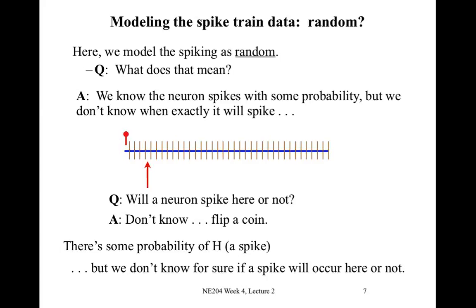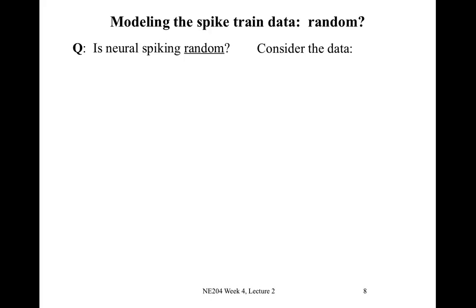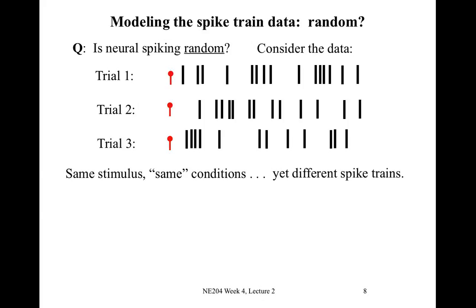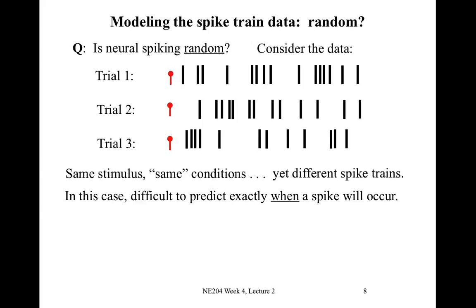A question we can ask is: is neural spiking random? To answer that, let's consider some data shown here. We have neural activity recorded in three trials where we deliver the same stimulus to the neuron each time, under the same conditions. But even though we have the same stimulus and the same conditions, the spike trains are different — spikes occur at different times, and it's difficult to predict exactly when a spike will occur. It's a coin flip, and we don't know for sure what will happen.